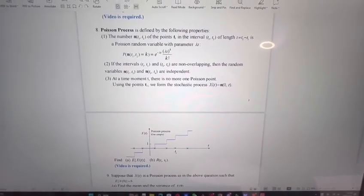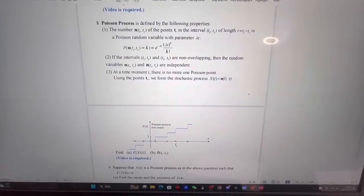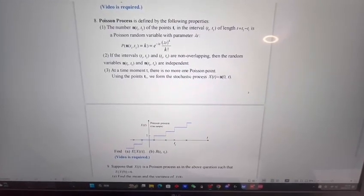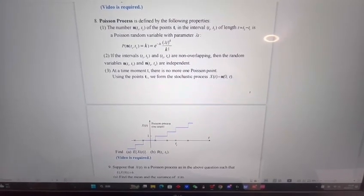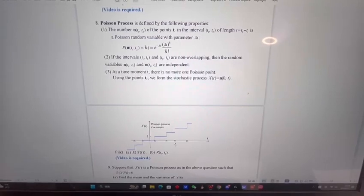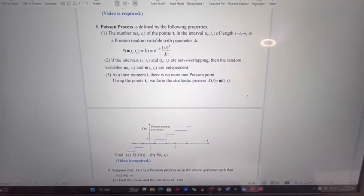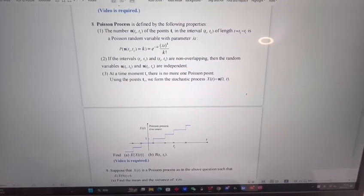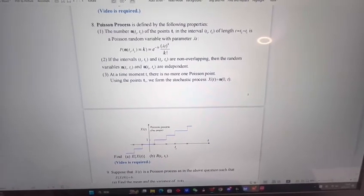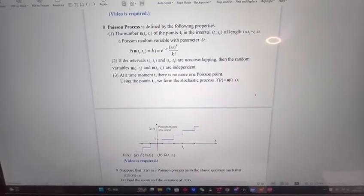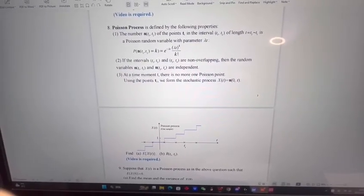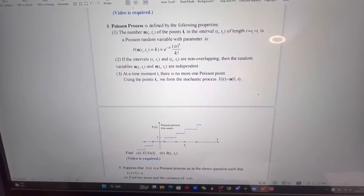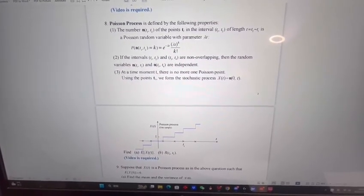The question basically introduces the Poisson process to us. The Poisson process is defined as P(N(t1,t2) = k), and this function equals e to the power of negative lambda times t, times lambda t to the power of k, divided by k factorial.